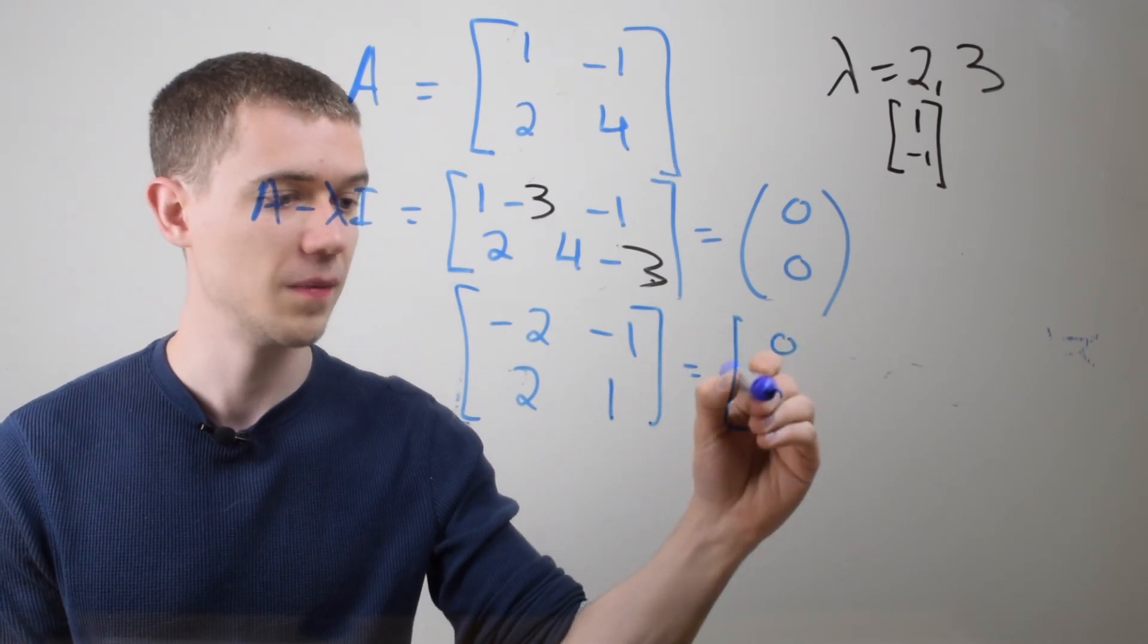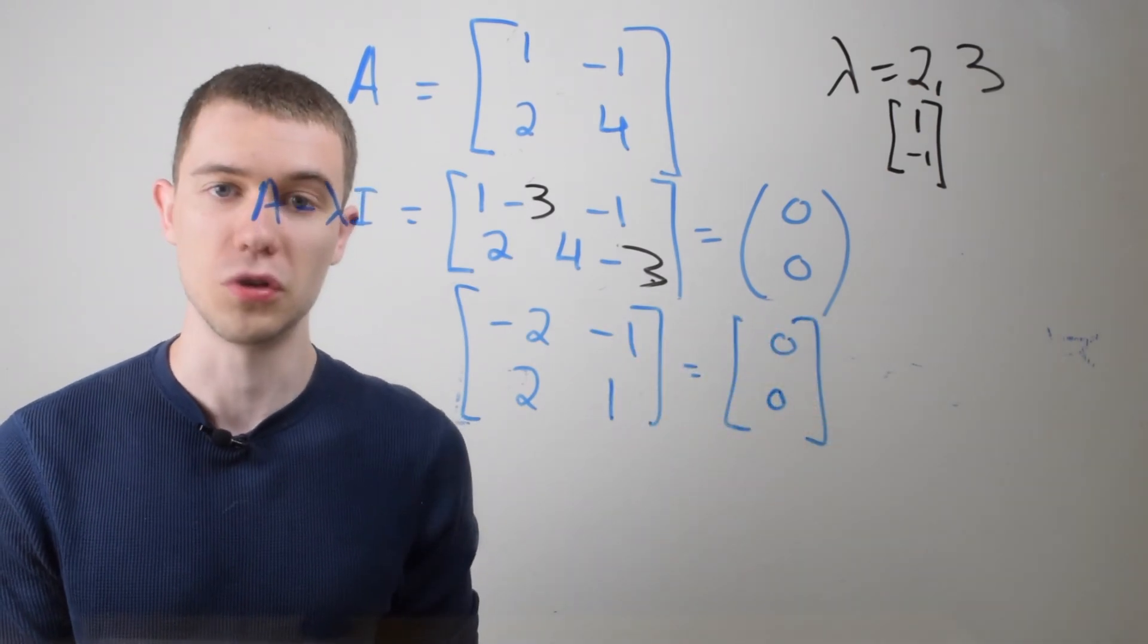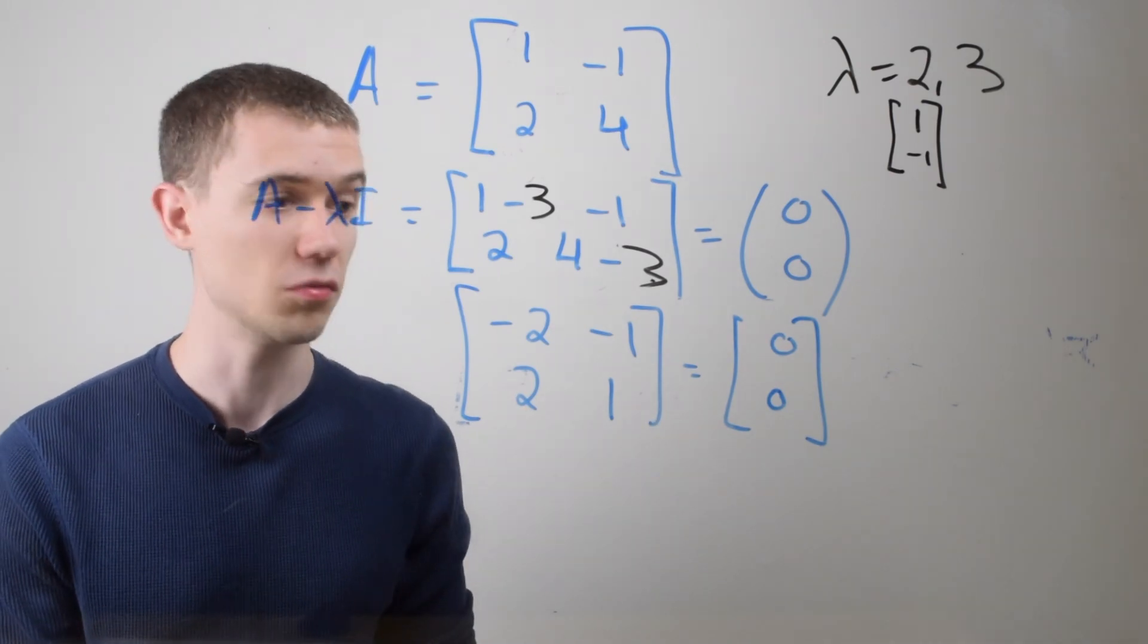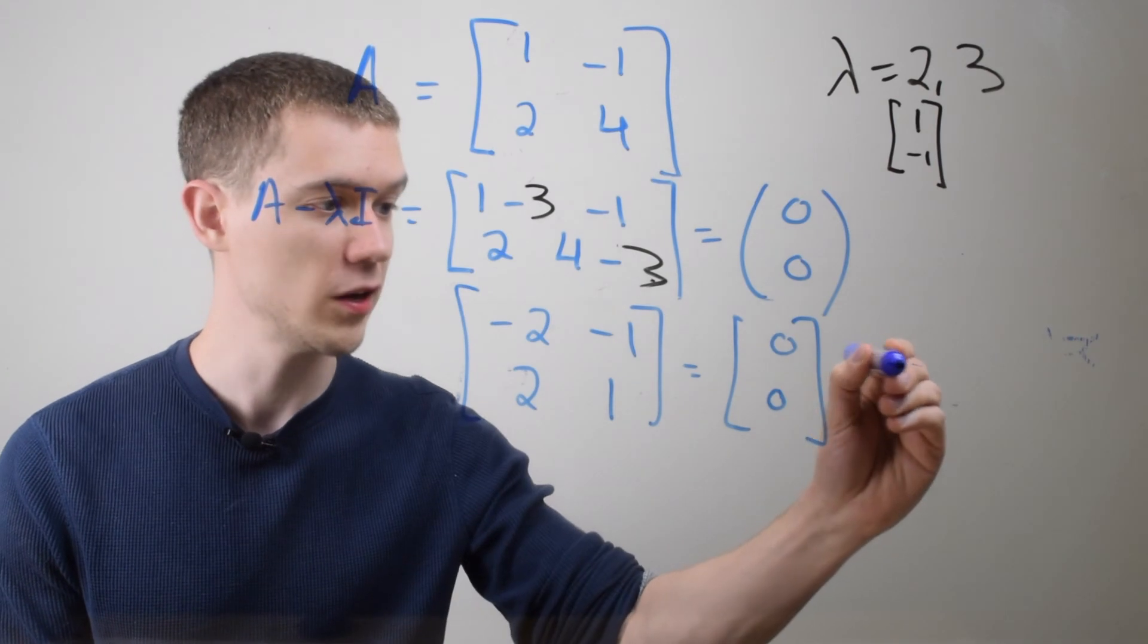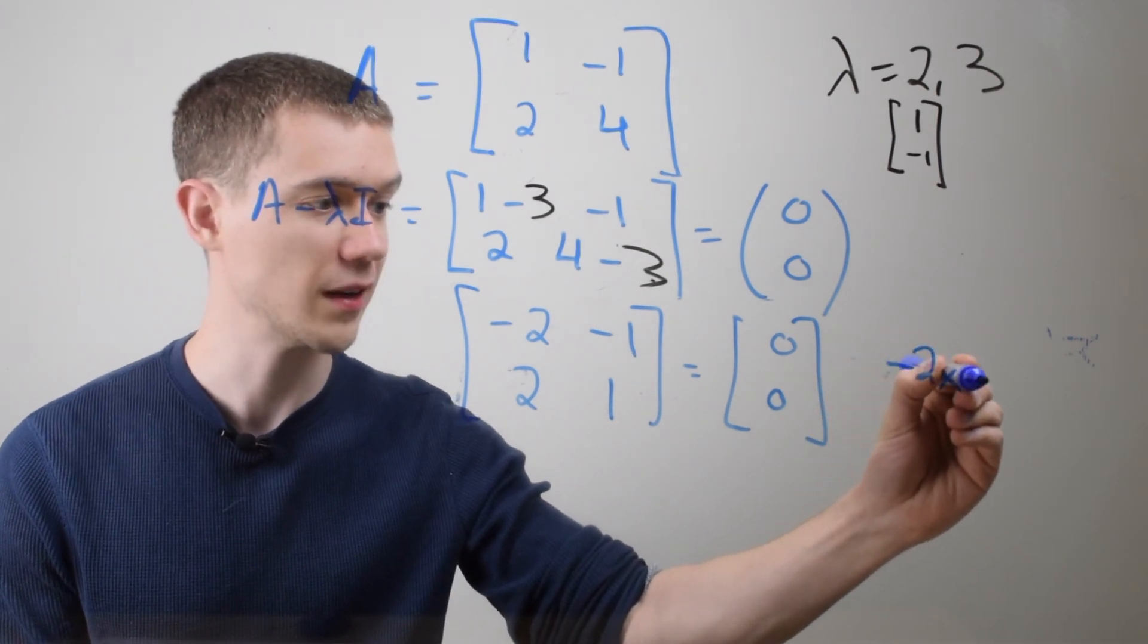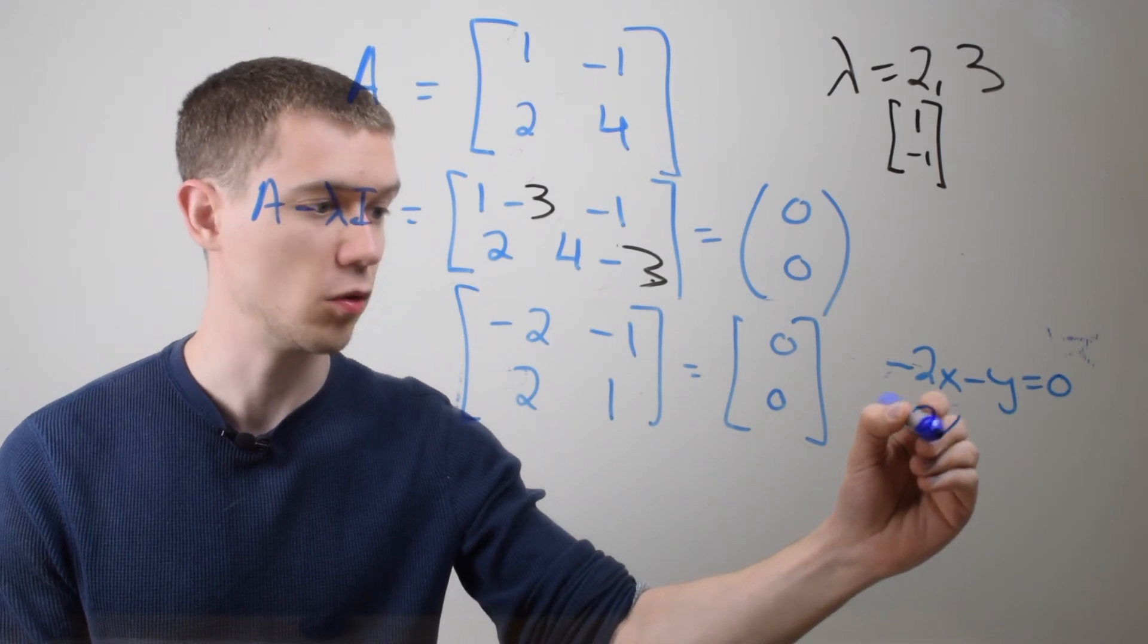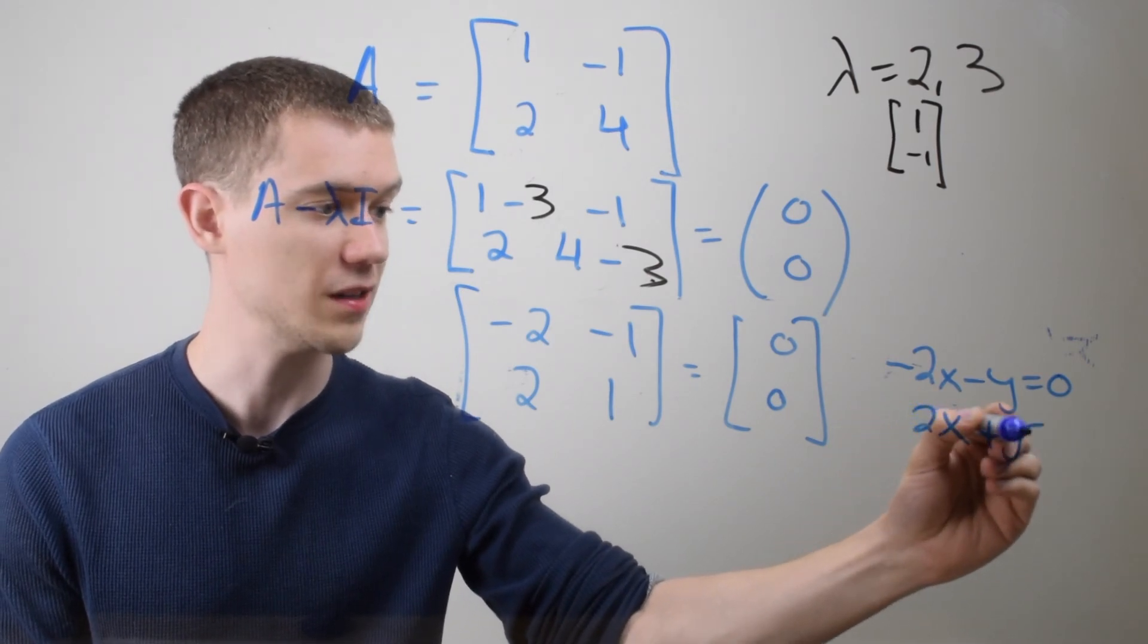Now if I reduce this, it's going to be the matrix -2, -1, and then 2, 1. And again, you're noticing that these rows are just scalar multiples of each other, right? The second row is just negative the first row. And if you write this in equation form, this would be -2x - y equals zero, or just as equivalent, 2x + y is equal to zero.